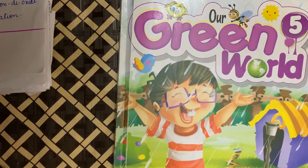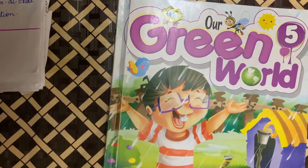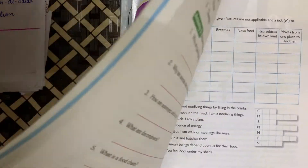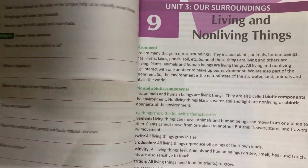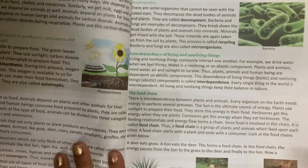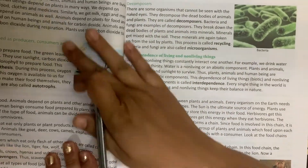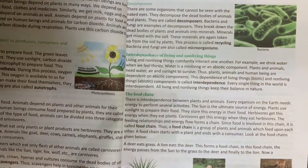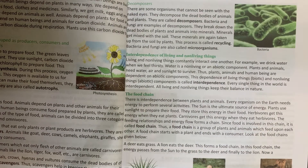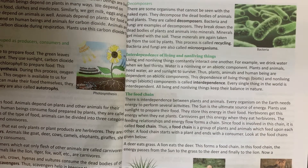In class 5, how are you all? Check out your EVS book, children. Page number 40 and 41. We are doing reading of this chapter: living things and non-living things. What we have read till now...